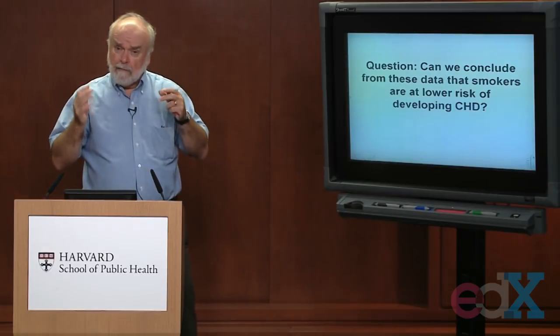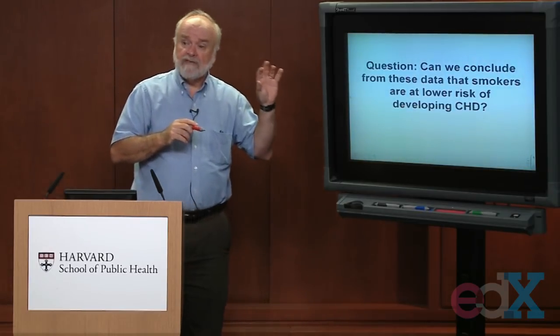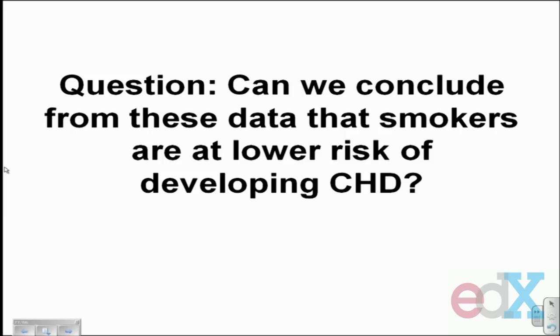Let's get back to this cross-sectional study and interpret the results. The good news is we've already talked about this interpretation when we discussed prevalence. A key question we want to ask: does this study help us conclude that smokers have different risks than non-smokers? In particular, does finding a lower prevalence of coronary heart disease among smokers imply that smokers are at lower risk of developing coronary heart disease in the first place?